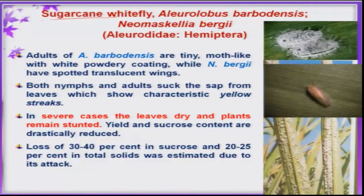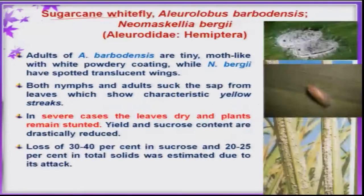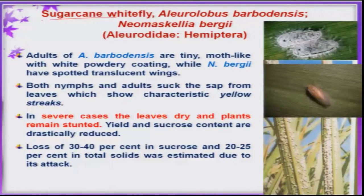The occasionally occurring pest sugarcane whitefly sometimes becomes important. Both nymphs and adults suck the sap, and because of this continuous sucking the plants become stunted. Sometimes 30 to 40 percent yield loss can occur because of this pest. These are some of the important pests and their nature of damage. In our next class, we will discuss various tactics or management practices that can be adapted for these sugarcane pests.